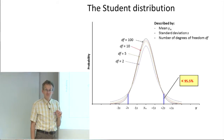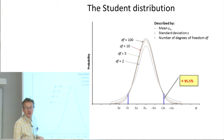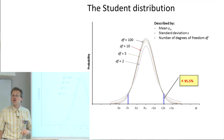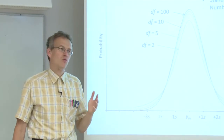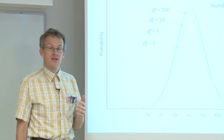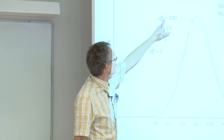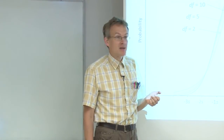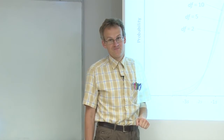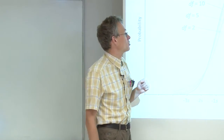The Student distribution has an interesting property: whenever the number of degrees of freedom approaches infinity, the Student distribution approaches the normal distribution. For all practical cases we can say that from 50 to 30 measurements give us a distribution function which is almost indistinguishable from the normal distribution. Therefore, the Student distribution curve obtained from 101 measurements can be regarded as the normal distribution.